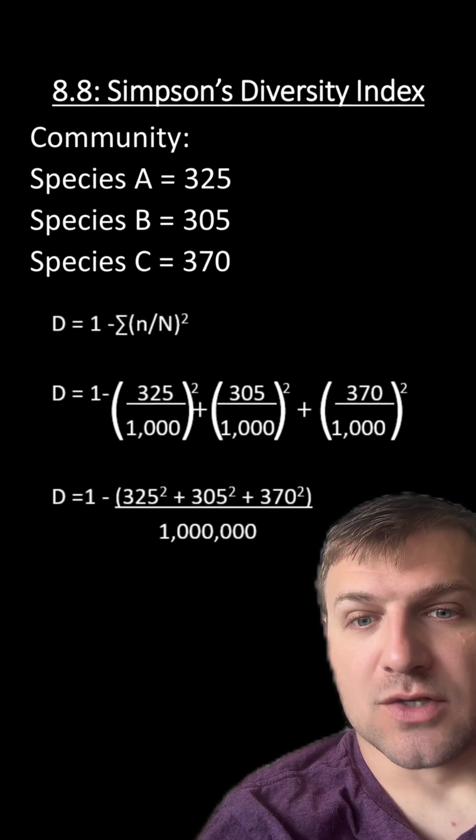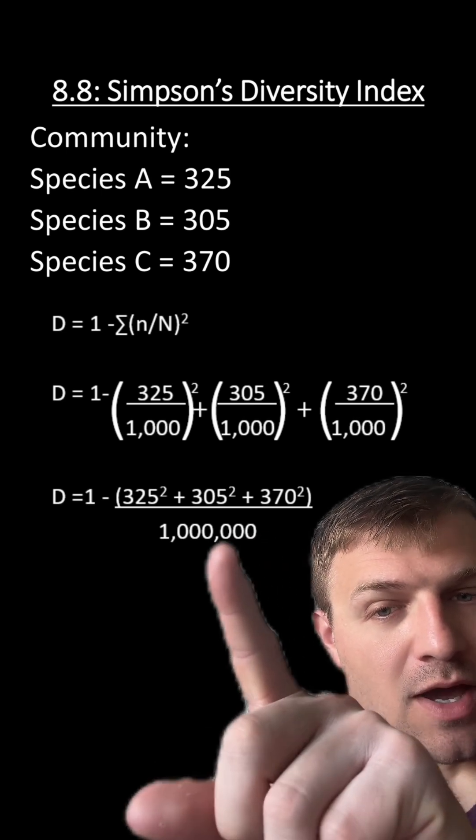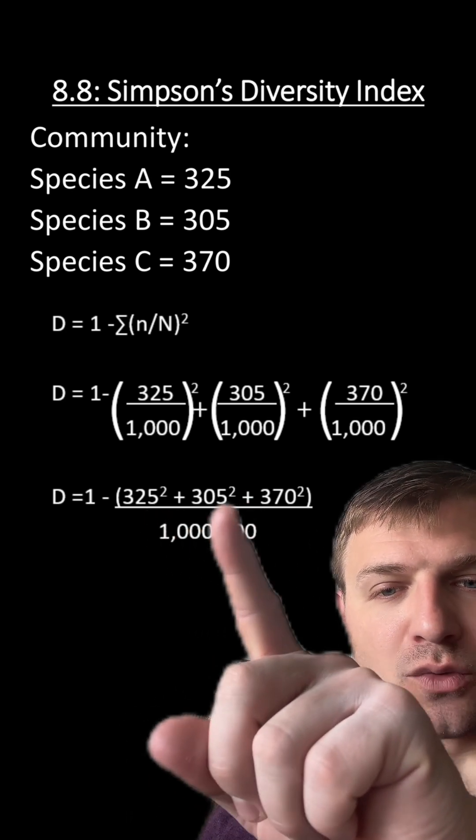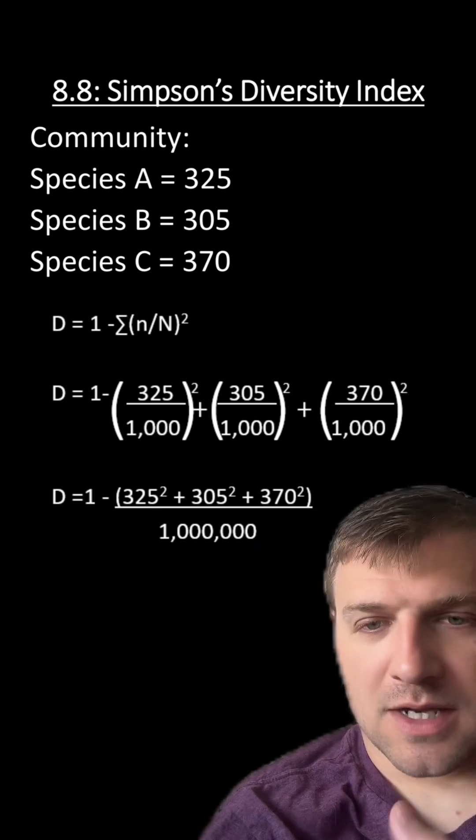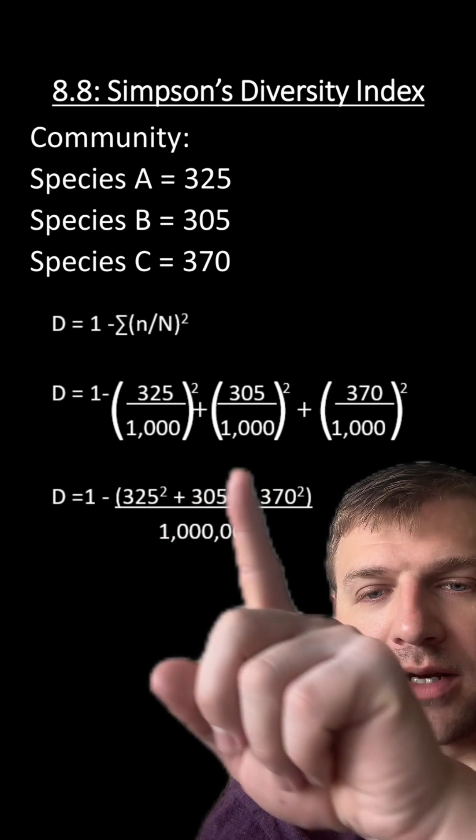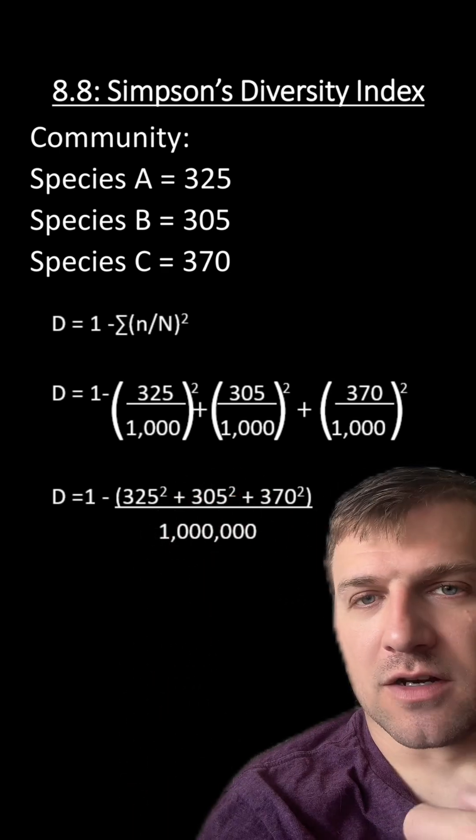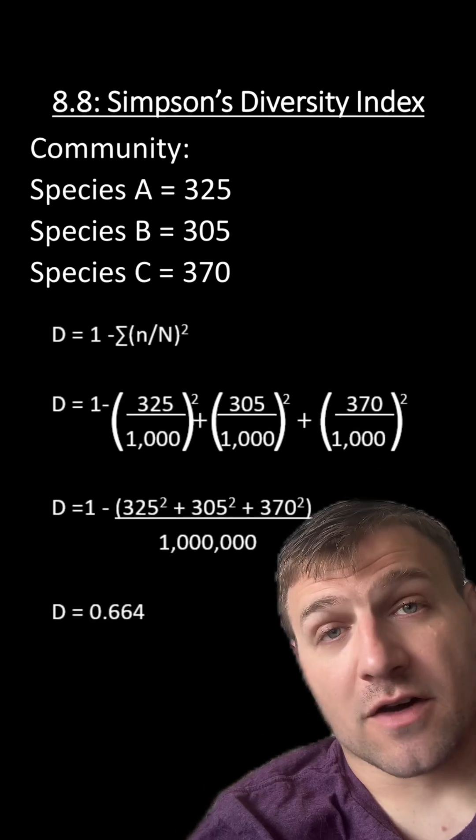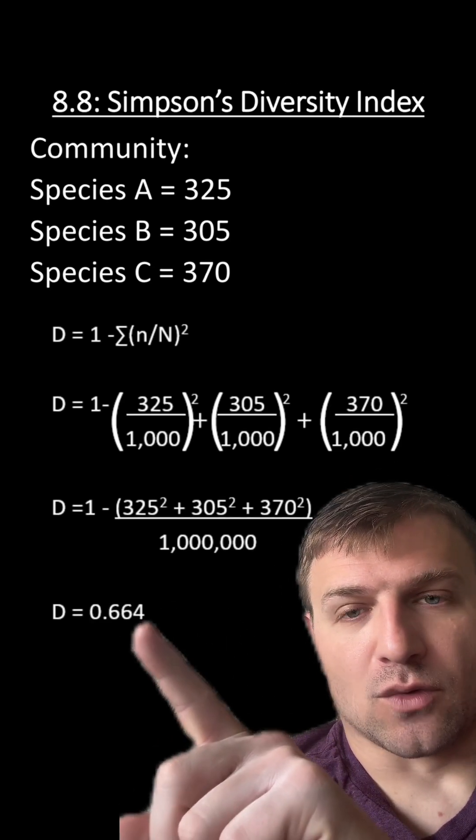1,000 squared is 1 million. So we're going to place this down here on the bottom. And to simplify this, we can just put each species squared plus each other. And this is going to be one minus this number for our diversity index. So our diversity index is going to be 0.664.